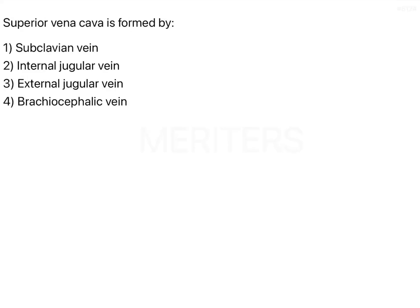The question asks: the Superior Vena Cava is formed by which option — subclavian vein, internal jugular vein, external jugular vein, or brachiocephalic vein? The venous supply and venous drainage of the facial and neck area is an important aspect for dentistry and for NEET as well. So we should try to remember it while I explain and I will try to make it simpler.